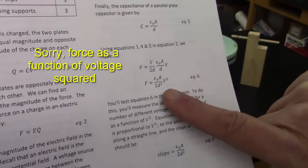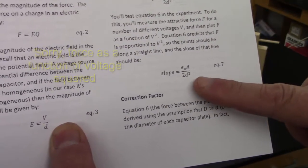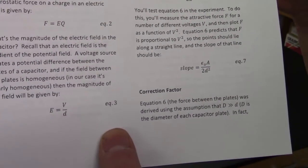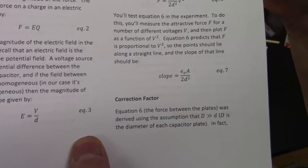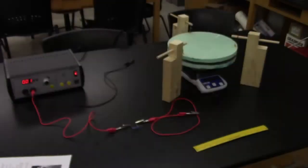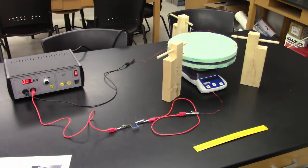And then the slope of that line should be this part right here, from which you're going to derive epsilon naught, knowing A and D. And of course that should be close to the known book value of epsilon naught. So this is how this experiment is going to work.